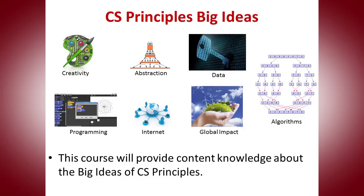CS Principles seeks to broaden participation in computer science by providing an engaging and broad curriculum that showcases the diverse and exciting opportunities available in computer science. The CS Principles curriculum is based on seven big ideas. The big idea associated with creativity instills within students the understanding that computer science enables a different type of creative expression, allowing exploration of innovative ideas contextually situated around themes and topics of individual interest. The concept of abstraction is introduced as a core organization and problem-solving concept that can help address the complexity of scalable computing solutions.